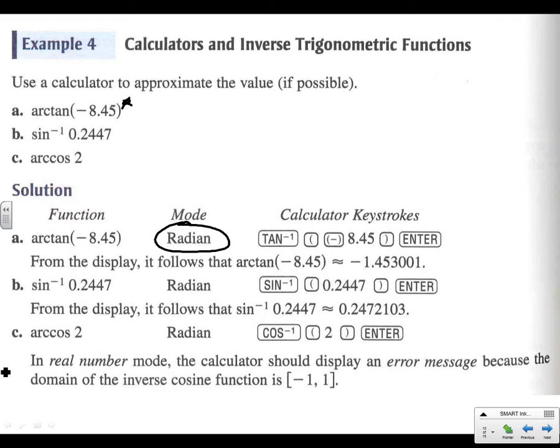Now we're going to get an error down here on number C, problem C, because we're trying to do the arc cosine of 2. Remember, cosine is x over r, adjacent over the hypotenuse. And remember that the hypotenuse always has to be the longest side. So we'll get an error on that one.